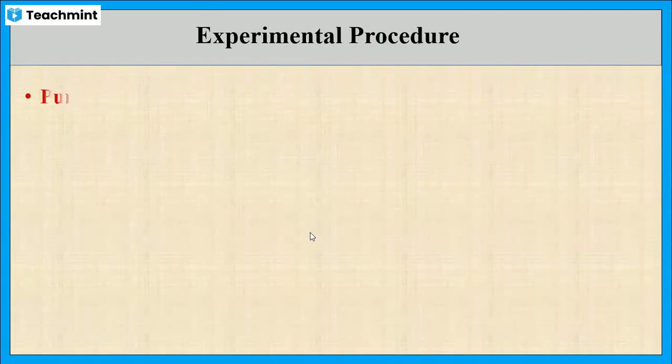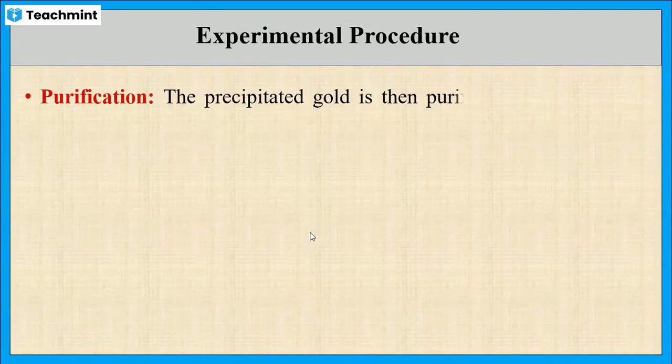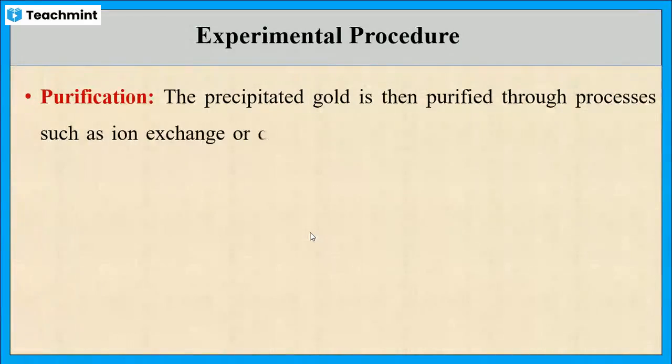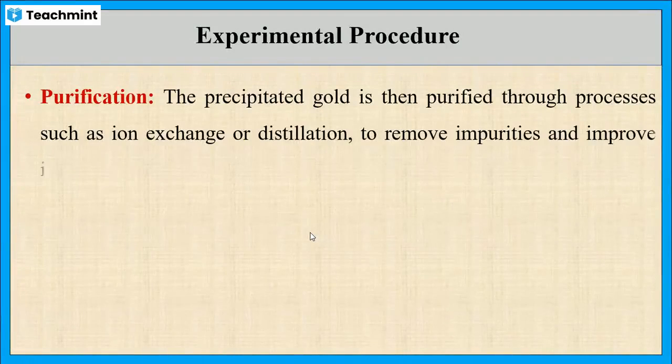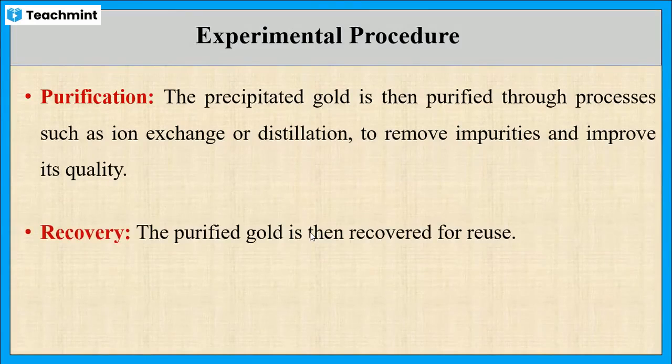The next step is purification. Here, in order to improve the quality of gold as well as to remove any impurities, the precipitated gold is purified using ion exchange or distillation methods. Finally, the purified gold is recovered for reuse.